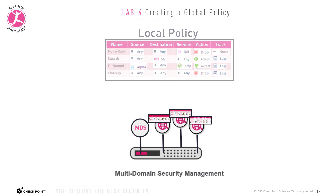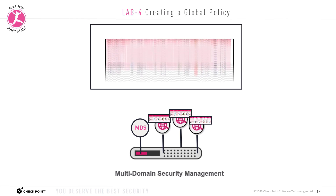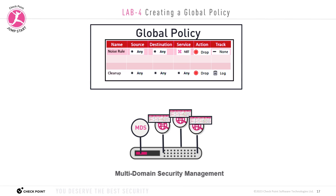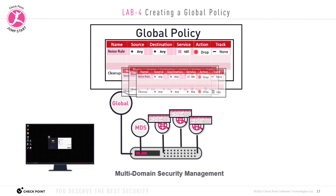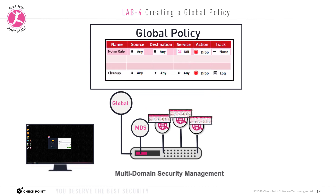In Lab 4, in this lab, we're going to show you how to create and install a global policy. The previous lab, Lab 3, was just a prerequisite for this lab. We had to create and install local policies first, before we can do the global policy installations. Now a global domain is automatically created when we installed the MDS server. So in this lab, we're going to log into the global domain and create the global policies with global rules, and then assign the global rules to the local domains, to the local rule bases. This will append the global rules to the local policy, to the local rule base.